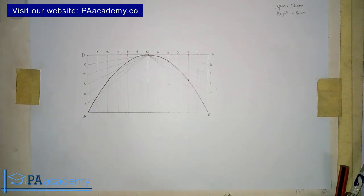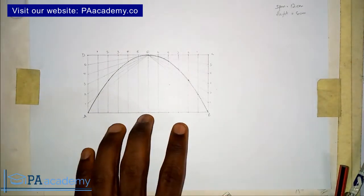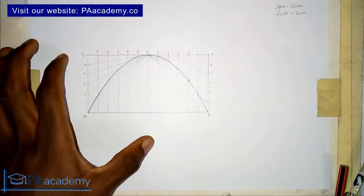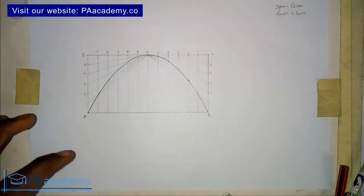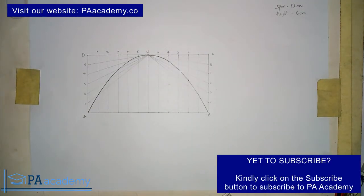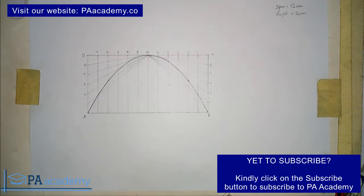Hello and welcome to PA Academy. This is Part 2 of the video series on parabola. In Part 1, I showed you how to draw a parabola. If you watched Part 1 and are coming to Part 2, I know you are expecting to see how to draw a tangent to the parabola. But before we draw a tangent, we first need to find the focus and the directrix of a parabola — that is what this video will be showing you.